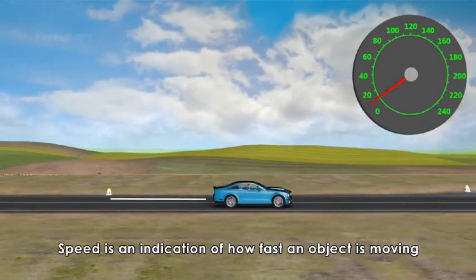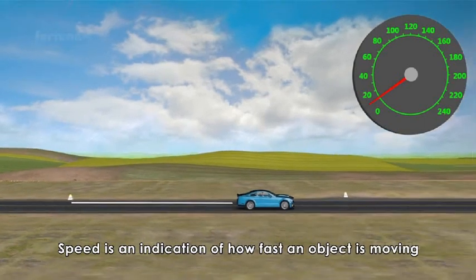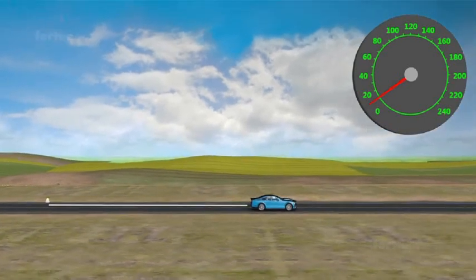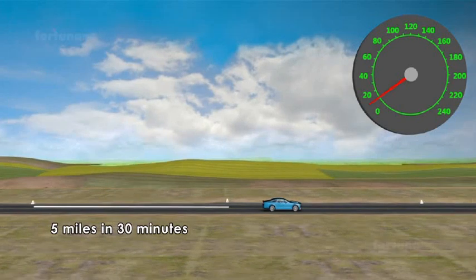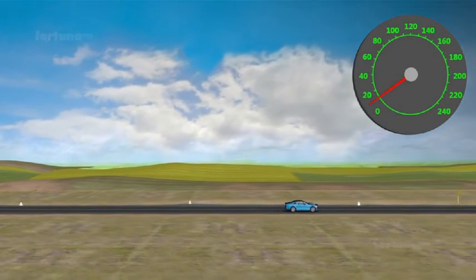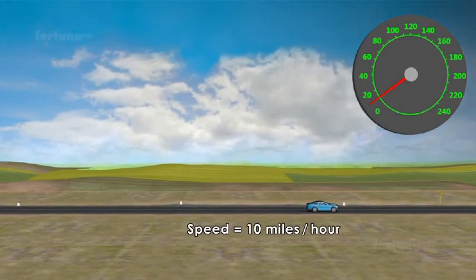Speed is an indication of how fast an object is moving. When a moving car is covering a distance of 5 miles in 30 minutes, we would say the car is moving at a speed of 10 miles per hour.